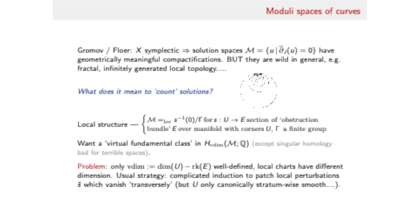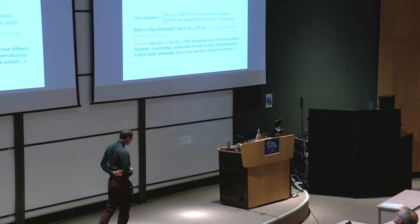But we want to extract a kind of analogue of the fundamental class of this moduli space so that if the moduli space was zero-dimensional we could count its points. The classical strategy was some sort of complicated induction which would patch local transverse perturbations. But having local transverse perturbations, usually transversality involves smoothness. These spaces, at least at first glance, are only strat-wise smooth. So a huge amount of work went into making sense of this.